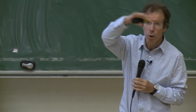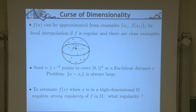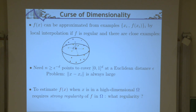If you want to interpolate your function, you need very strong priors about the regularity of the function. To estimate f of x when x is in a high-dimensional domain, you need very strong regularity priors of f. The question will be: what's the regularity, and how does that relate to deep networks?